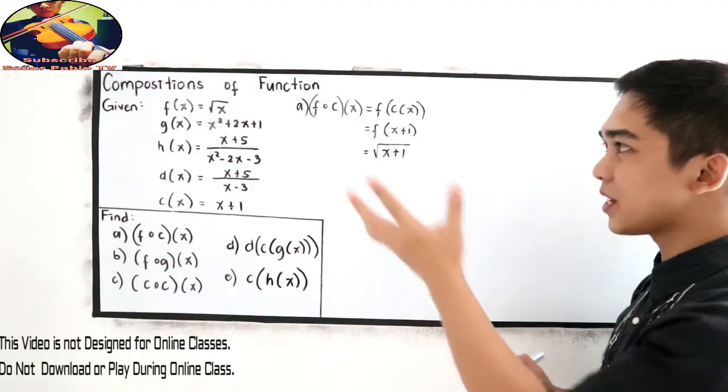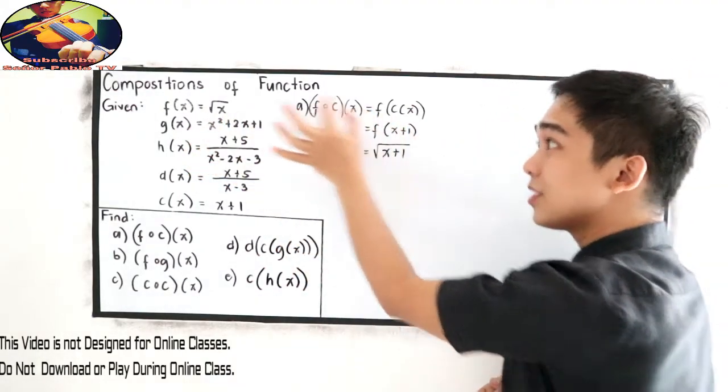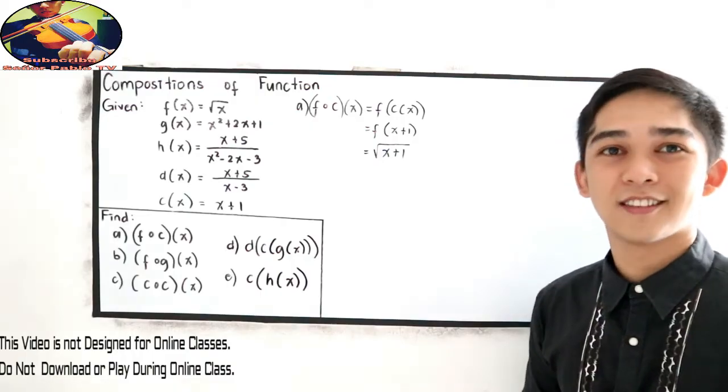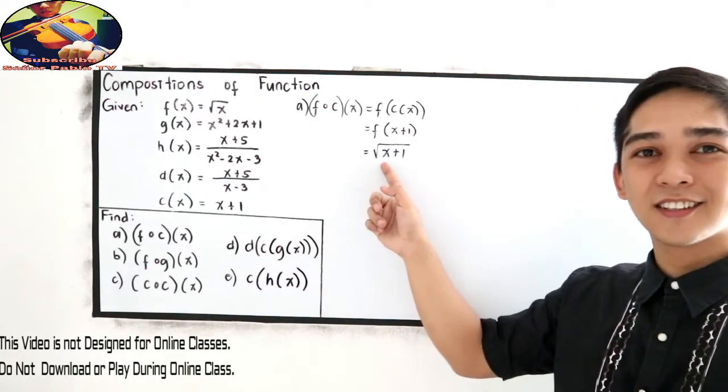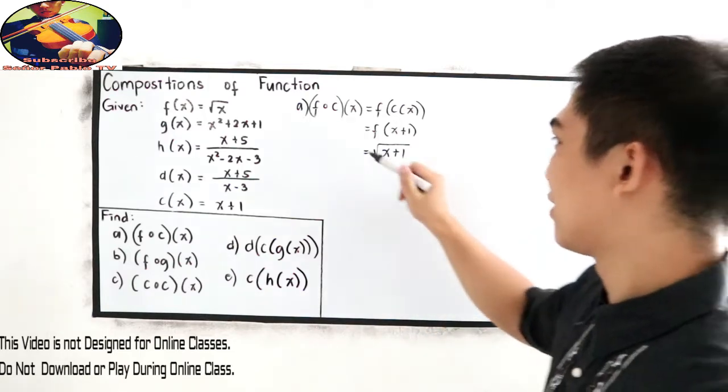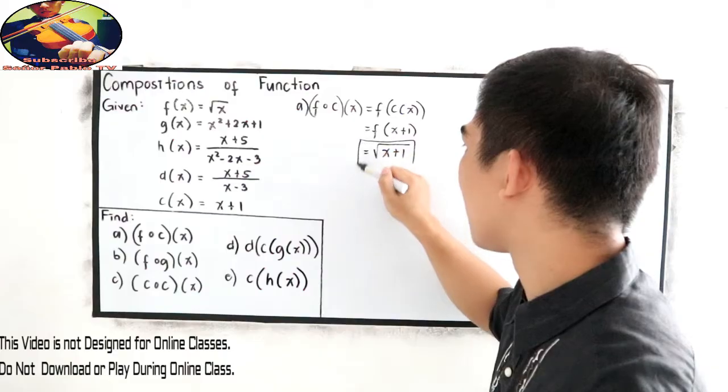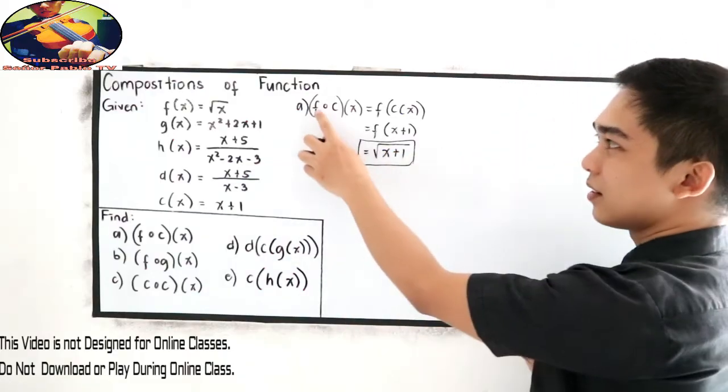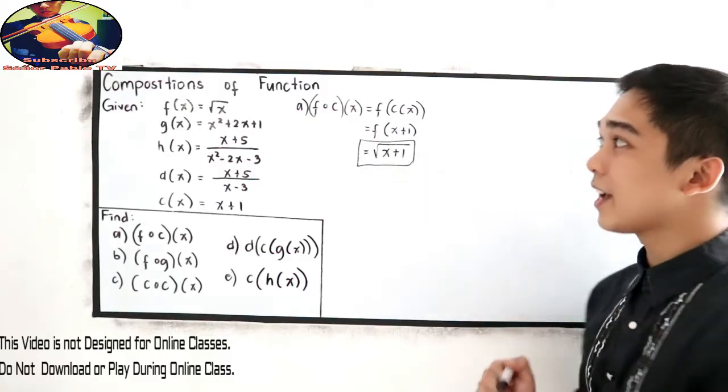Where is the other x? So we just change the x to x plus 1. So can we simplify? No. Since we cannot simplify, this will be the value of f composed of c of x, square root of x plus 1.